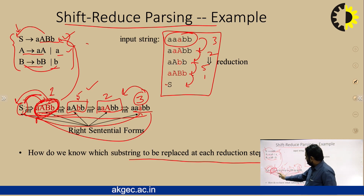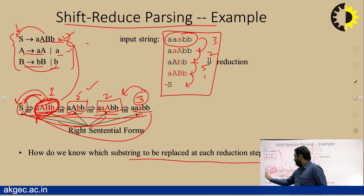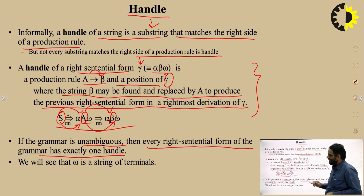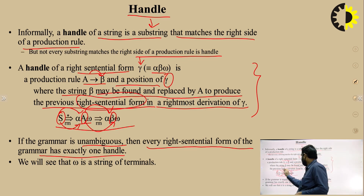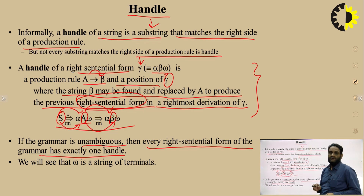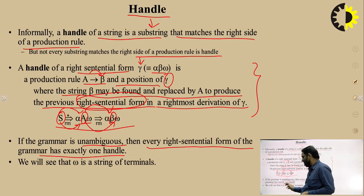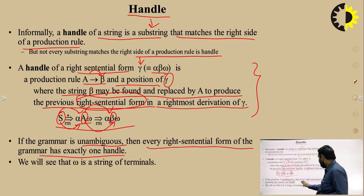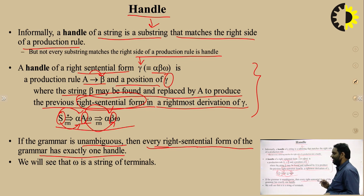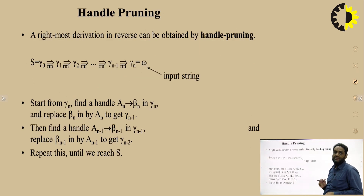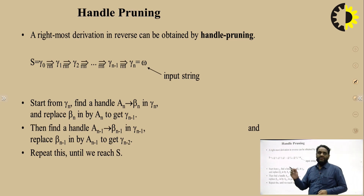You know what ambiguous and unambiguous mean. Ambiguous means a string has more than one possible parse tree. Here, the intermediate forms between the start symbol and the final string are called right sentential forms. If the grammar is unambiguous, every right sentential form has exactly one handle, which is replaced by a non-terminal using a valid production rule.